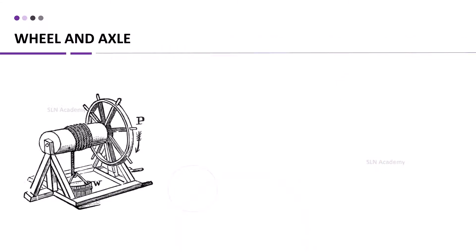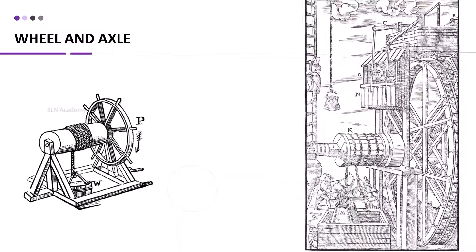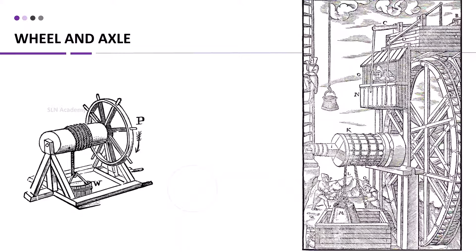People have been using these simple machines in many forms in olden days as well. This is one example of a water wheel driving a rope winch to lift loads in mining in olden days.